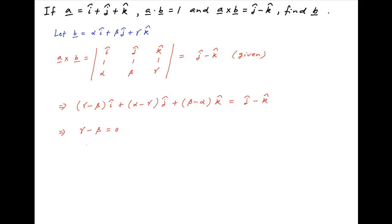Equating the coefficients of i, j and k on both sides, we get gamma minus beta is equal to 0, alpha minus gamma is equal to 1 and beta minus alpha is equal to minus 1.